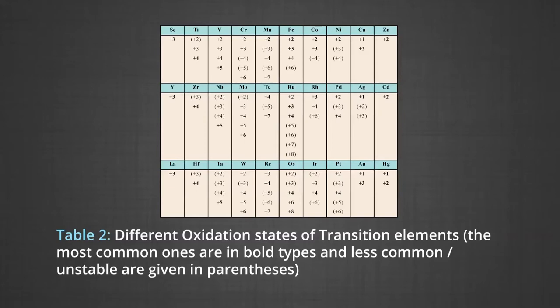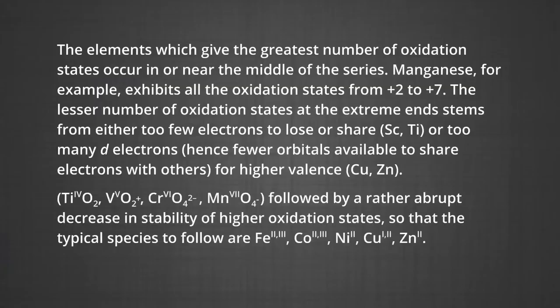The maximum oxidation state of reasonable stability corresponds to the sum of S and D electrons up to manganese. The formulas shown use superscript Roman numerals to represent the oxidation state of the transition metal in the given compound: titanium dioxide, vanadium dioxide, chromate ion, and the permanganate ion — followed by a rather abrupt decrease in the stability of higher oxidation states.